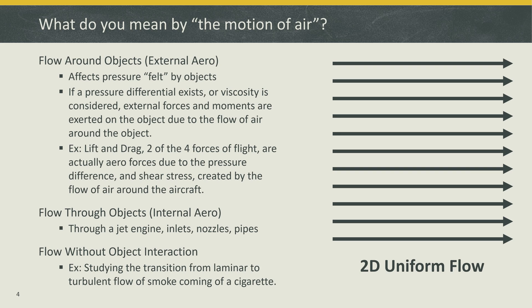What does 'the motion of air' mean? It is generally the study of air as it interacts with different objects. Let's start with a two-dimensional uniform flow of air, as shown on the slide. Uniform means that the flow of air is unchanging in direction, pressure, temperature, and velocity — some of the most important parameters in aerodynamics.